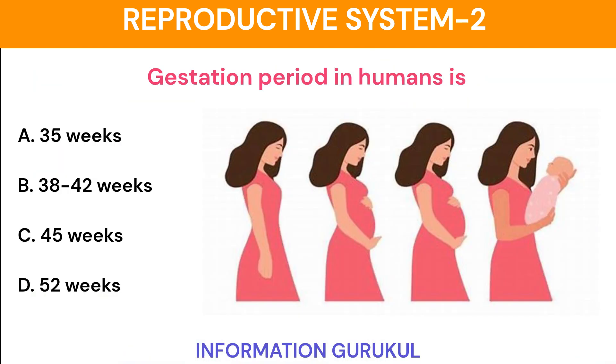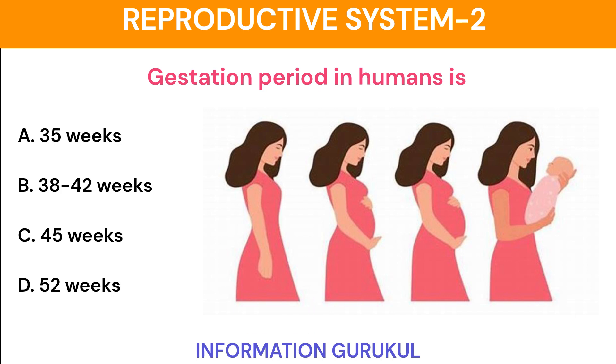The gestation period in humans is 38 to 42 weeks.